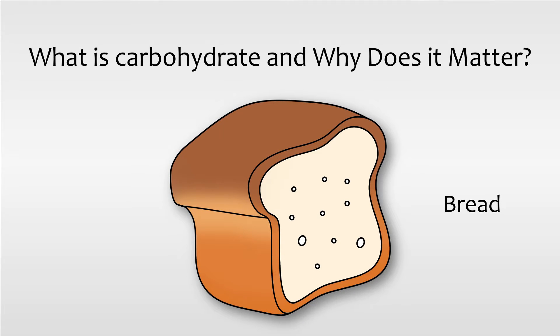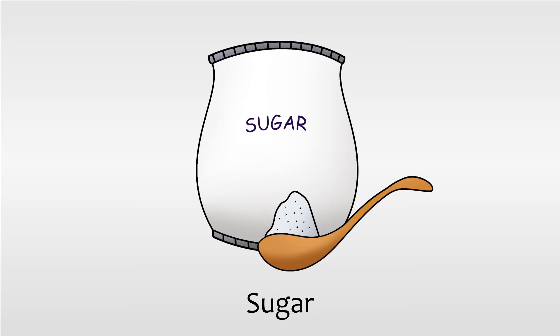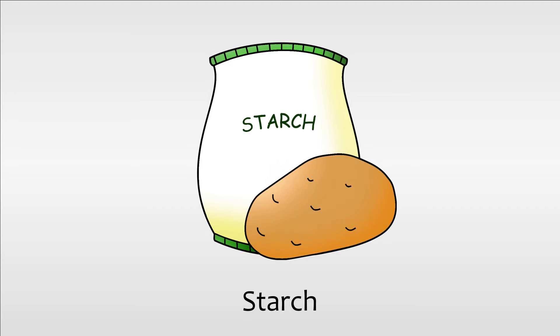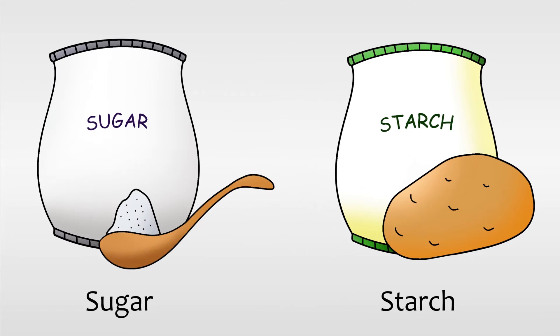What is carbohydrate and why does it matter? We commonly know carbohydrates as sugar or starch. Carbohydrates are essential nutrients that our body requires to function. They are broken down to be used as our body's main source of energy.